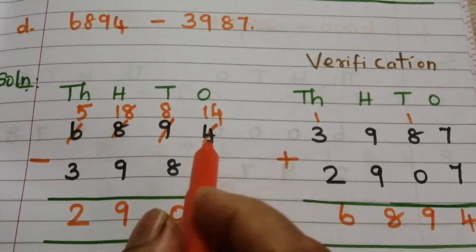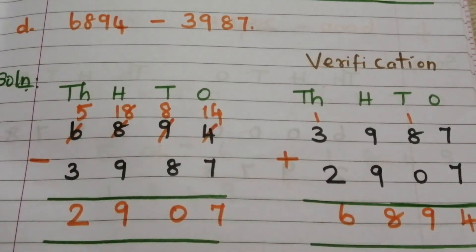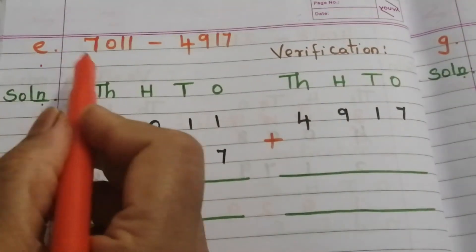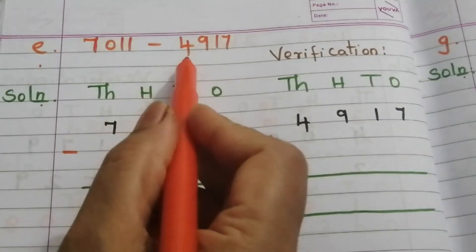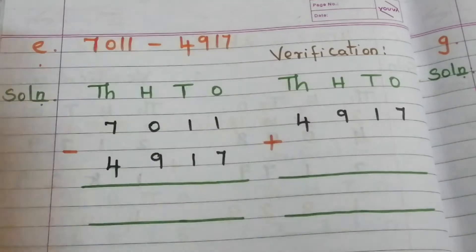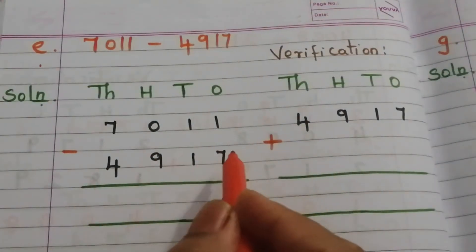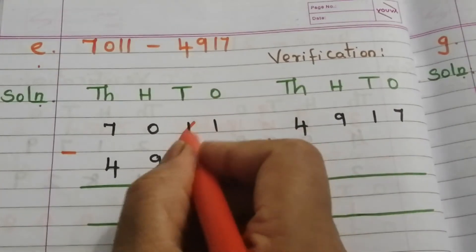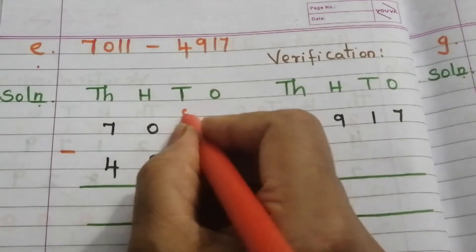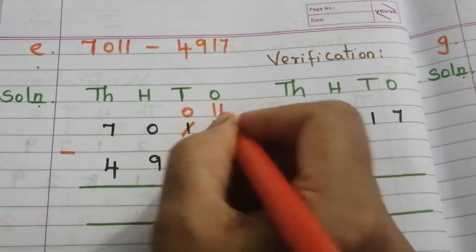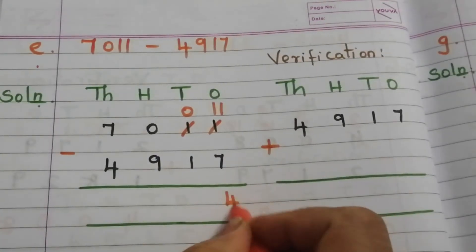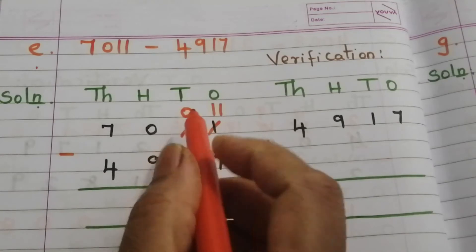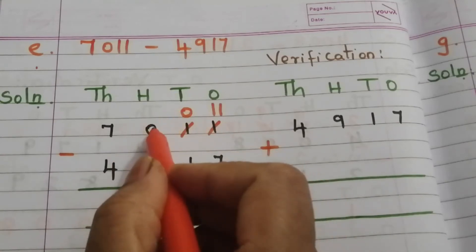Our answer 2907 plus subtrahend 3987 is equivalent to the minuend 6894, so our answer is correct. Problem E: 70011 minus 4917. Start from ones place. We can't subtract 7 from 1, so borrow: that 1 becomes 0 and this 1 becomes 11. 11 minus 7 is 4. We can't subtract 1 from 0, so move to the next place.